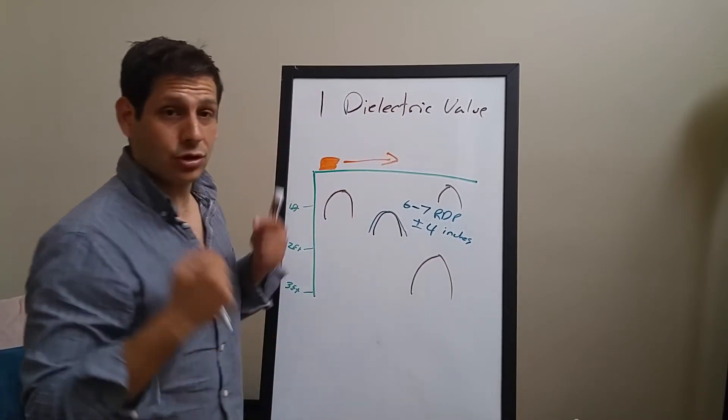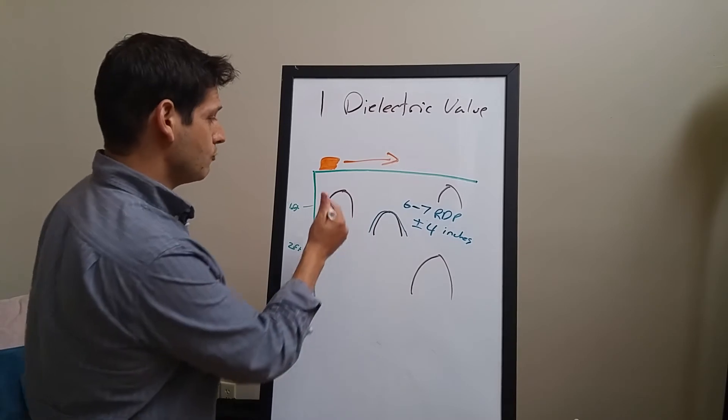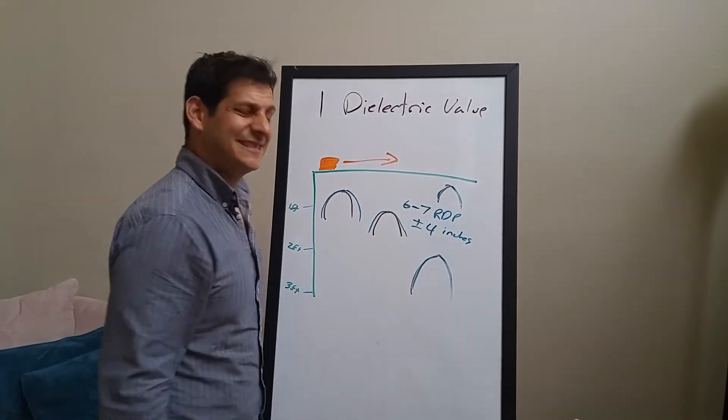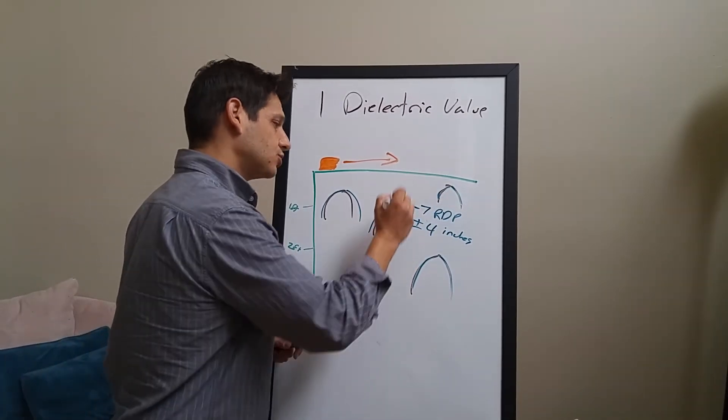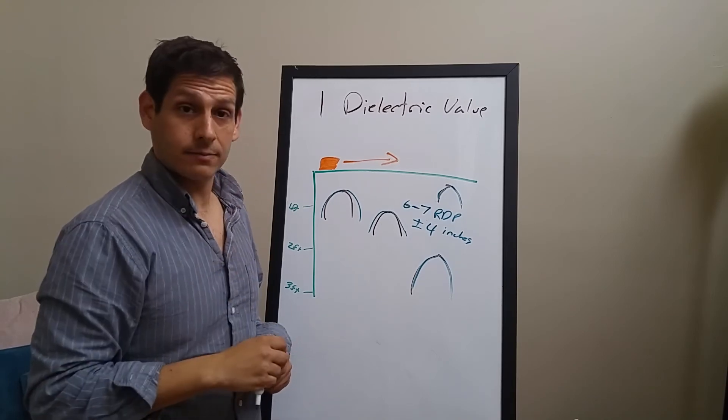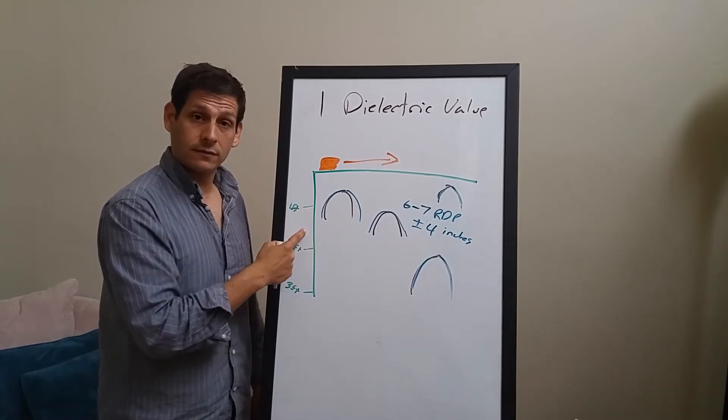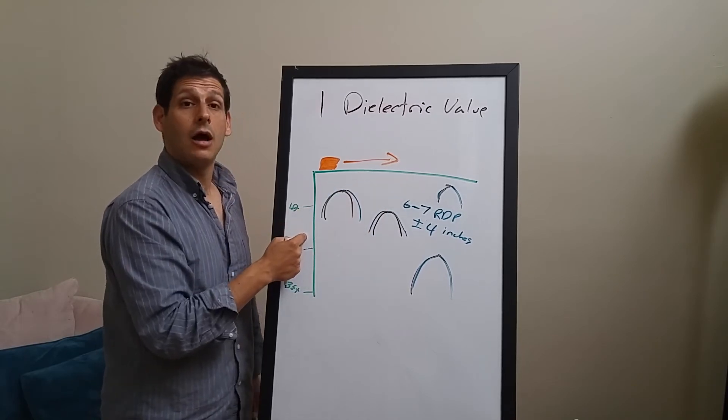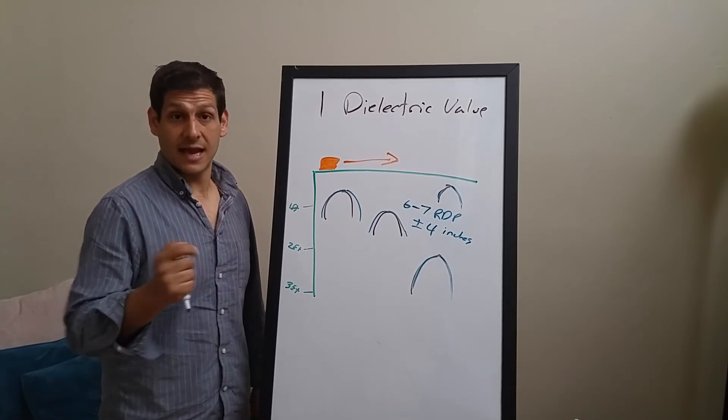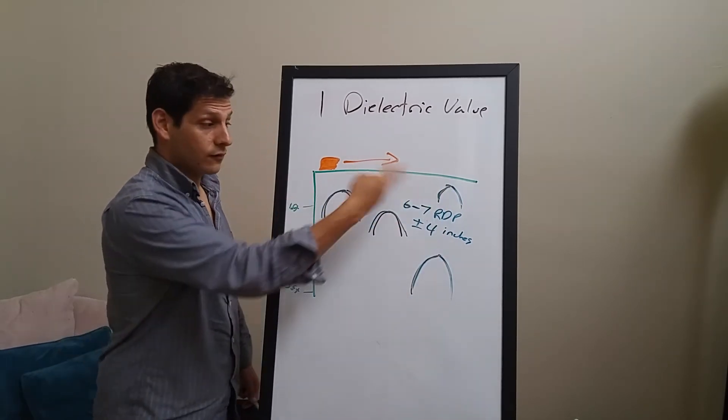Now you might say, well, one dielectric value, not a huge deal, but what if it's three dielectric values? Let's say you map a few of these things and now you have a range between six and 10 and you say it's seven, but it's actually 10. That's three RDP values. What's the difference on our site? That'd have been one foot. So you expect it's going to be two feet deep. You miscalculated by an entire foot. Somebody runs into it a foot shallower than you had expected because your hyperbola were off or your value was off by a couple of them.